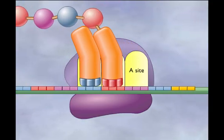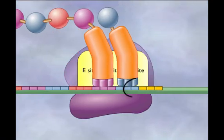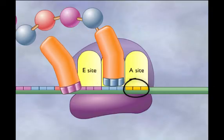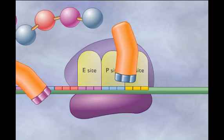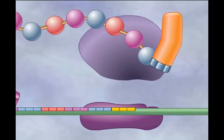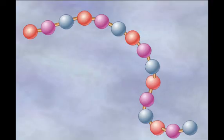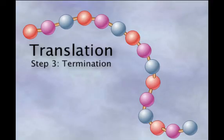This process continues until the ribosome reaches the stop codon, at which point a protein called release factor binds to the A site, rather than transfer RNA. The new protein releases from the ribosome, and the ribosome disassembles. This last step is called termination, and our new protein is now ready for packaging and export.